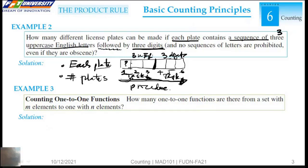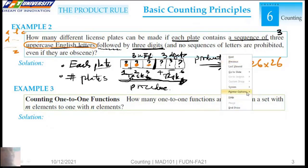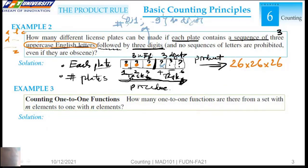How many ways? We do a product. How many uppercase English letters? Here we have 26, and here 26, 26. We have 10 digits, so here 10, 10, 10. So this is the result.